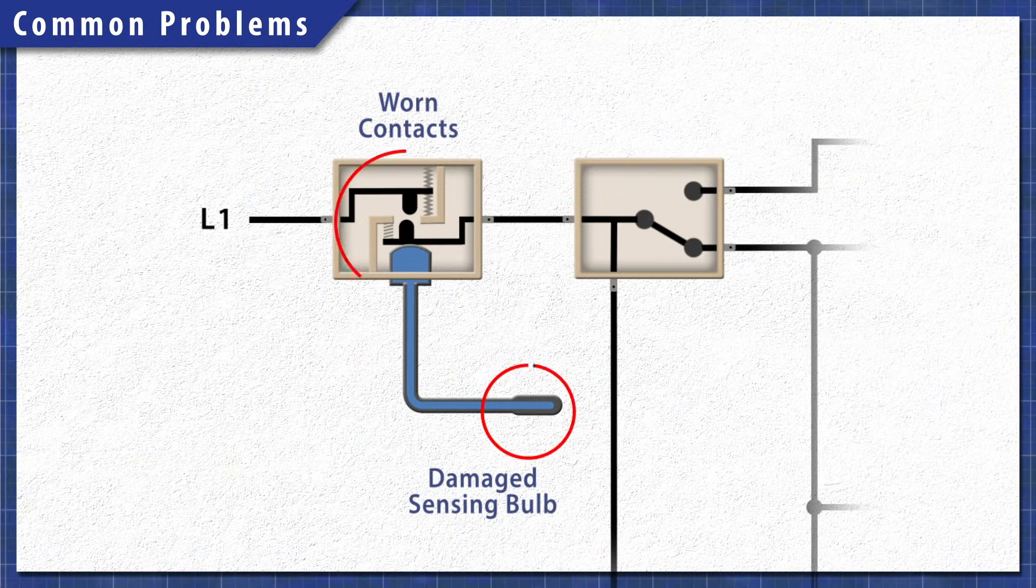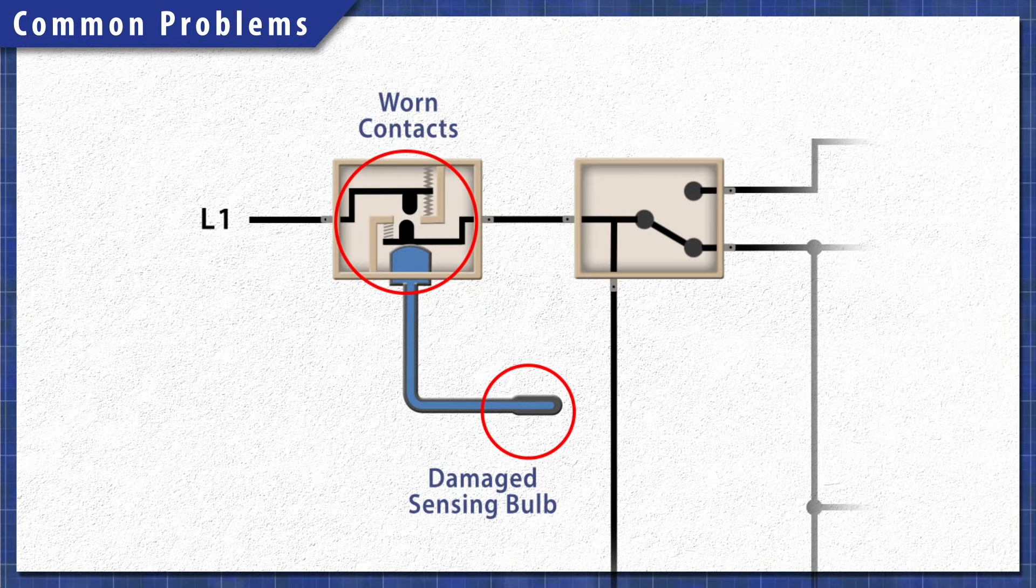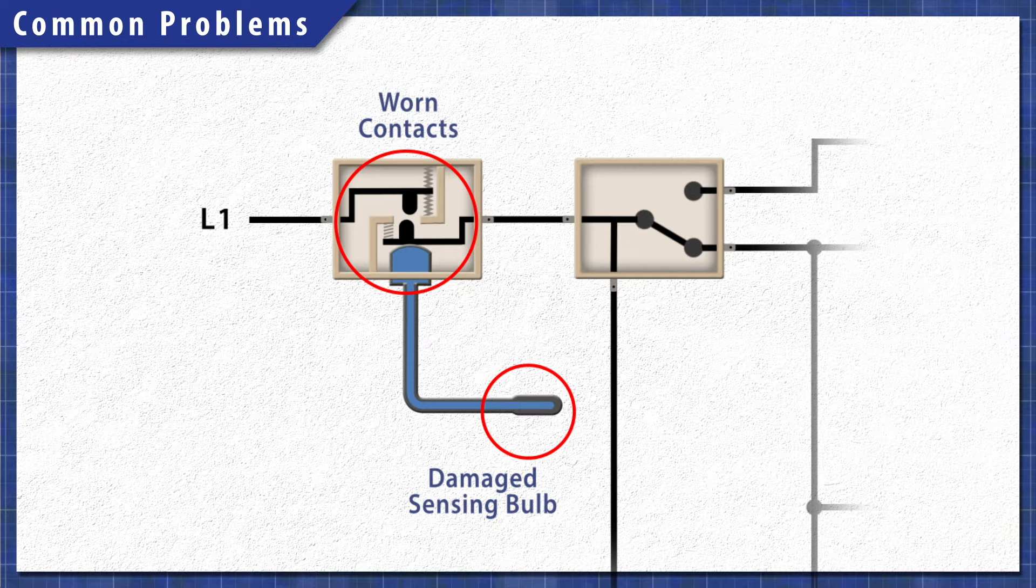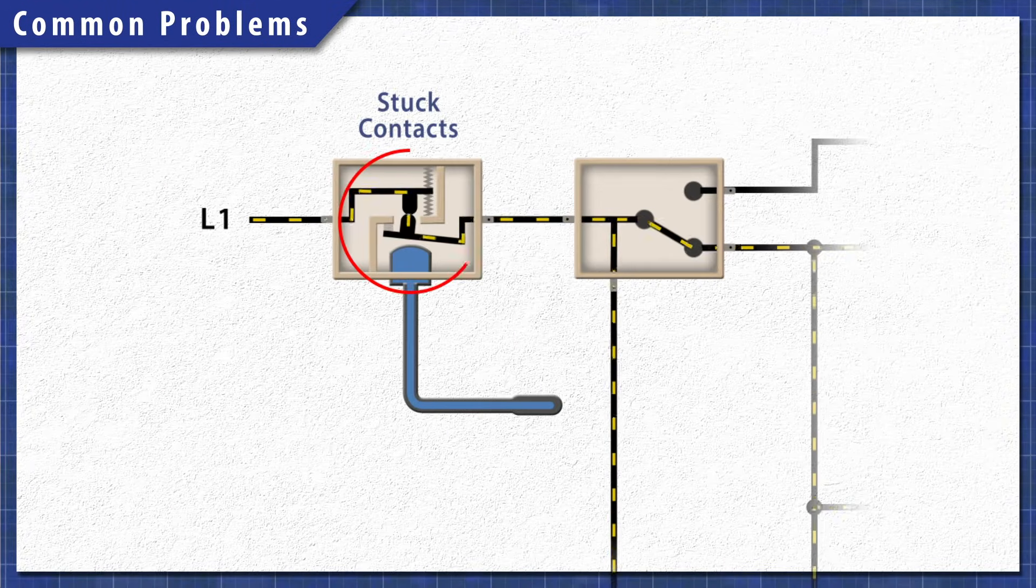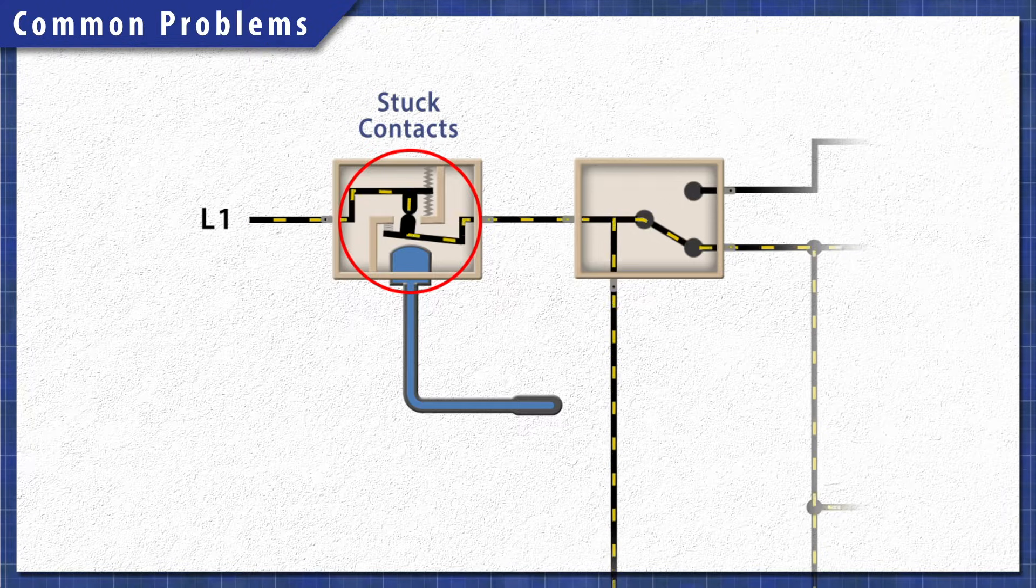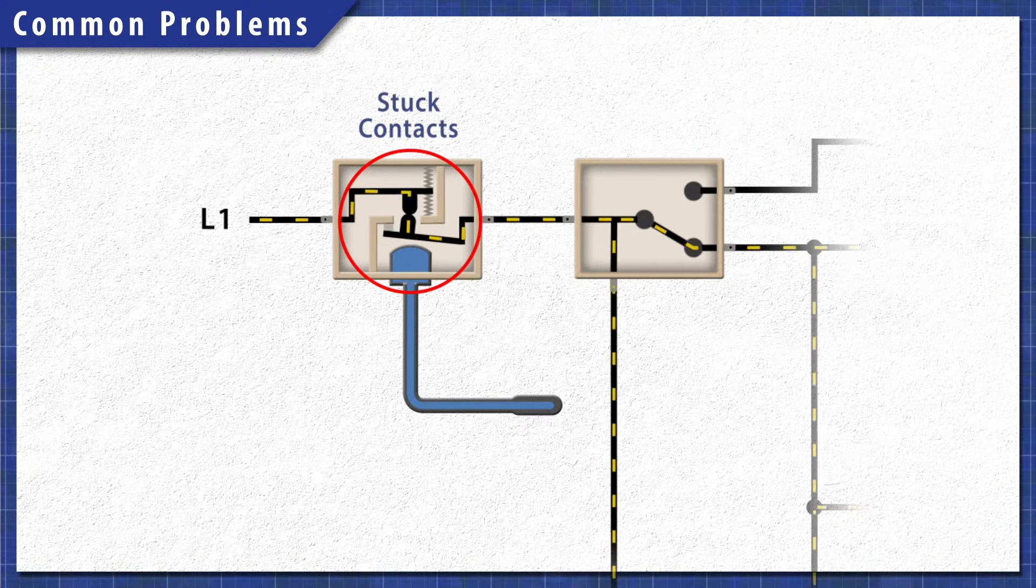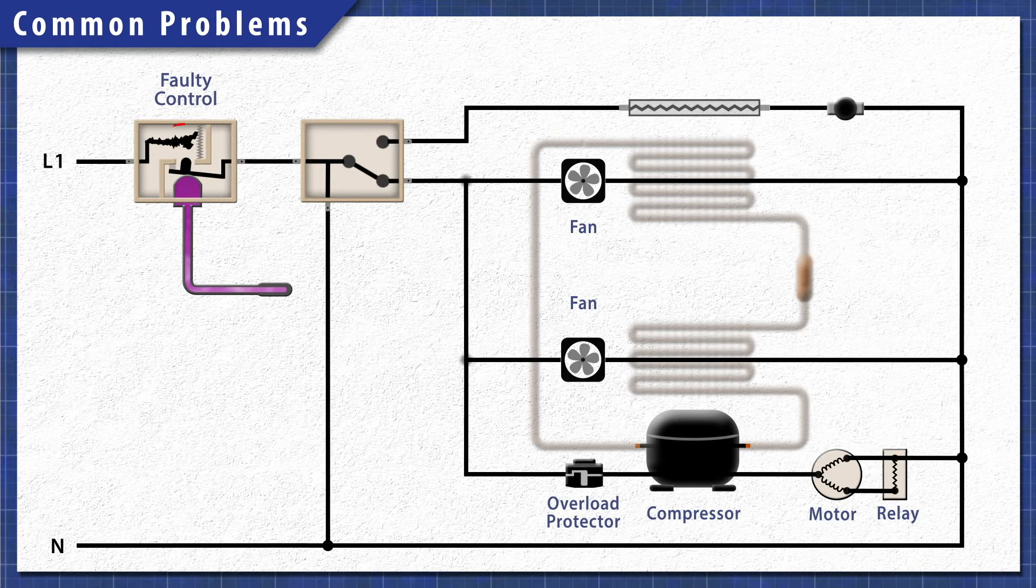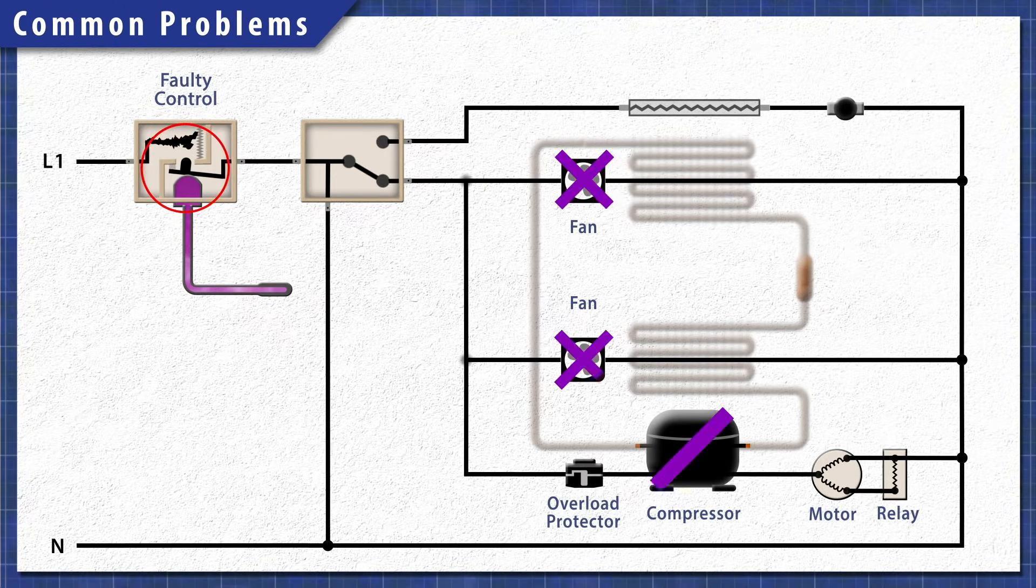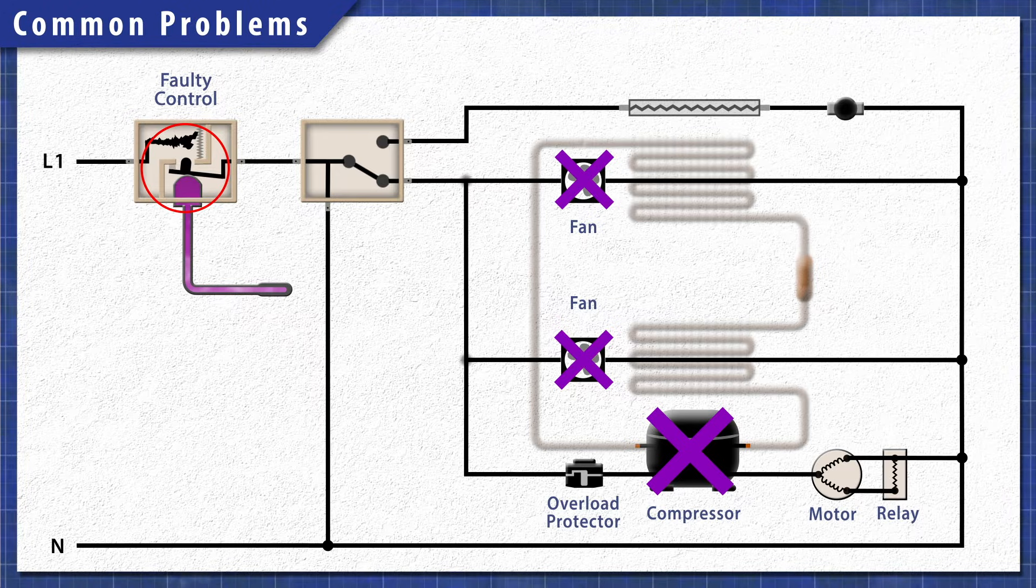If the sensing bulb is damaged or if the contacts are worn out, then the refrigerator will not maintain the right temperature. Additionally, if the contacts are stuck closed, then the compressor will stay on and the fridge will be too cold. If the thermostat fails completely, then no power is sent to the compressor and fans, which means the cooling cycle will not run.